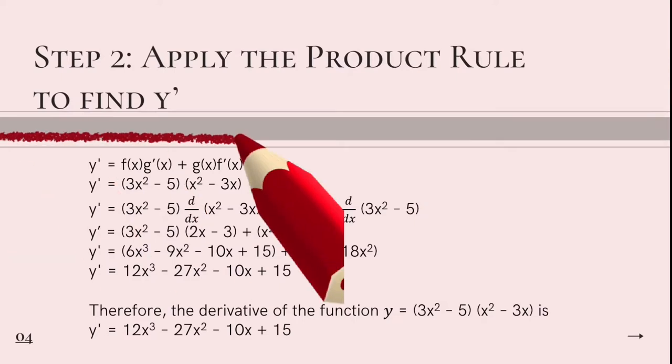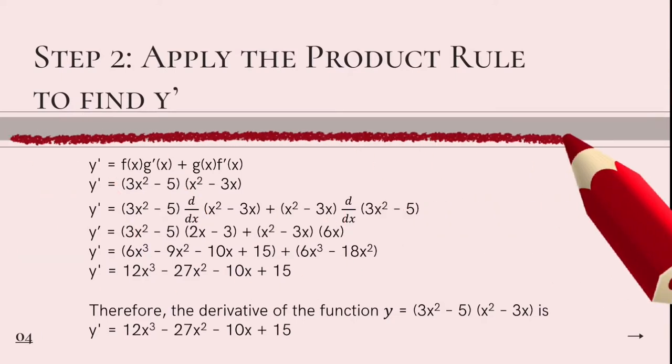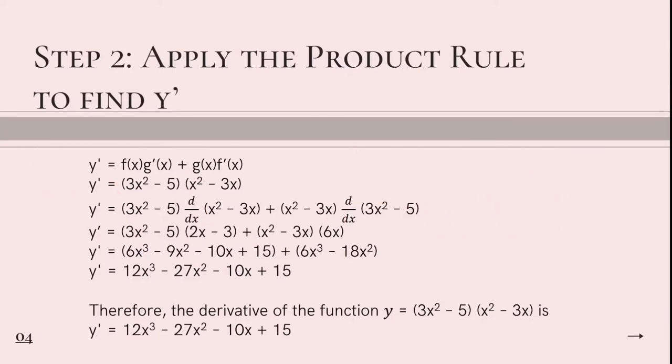Step 2. Apply the product rule to find the derivative of y. You'll be able to see the formula and below the formula is the given. 3x squared minus 5 represents as f of x times x squared minus 3x represents as g of x and we will need to find the derivative of f of x and the g of x. The derivative of x squared minus 3x is equal to 2x minus 3 and the derivative of 3x squared minus 5 is equal to 6x.